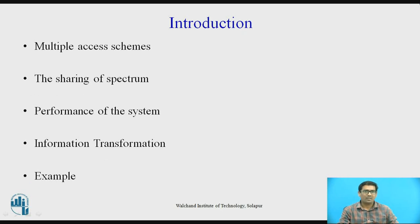Introduction. Multiple access schemes are used to allow many mobile users to simultaneously share a finite amount of radio spectrum. The sharing of spectrum is required to achieve high capacity by simultaneously allocating the available bandwidth or the available amount of channel to multiple users. For high quality communications, this must be done without severe degradation in the performance of the system.